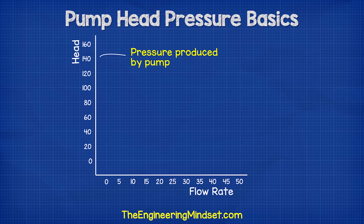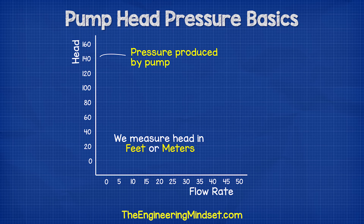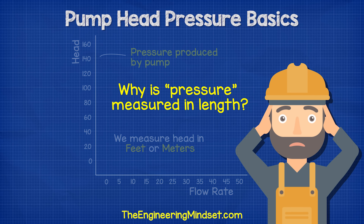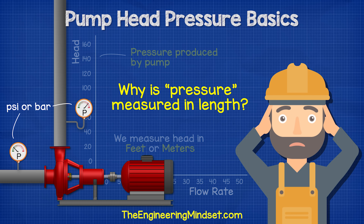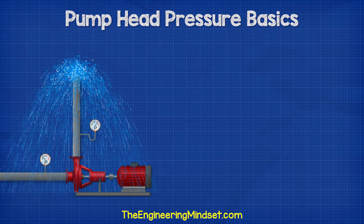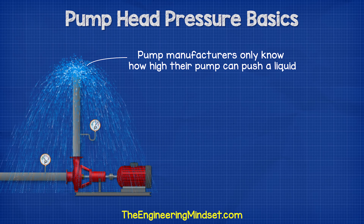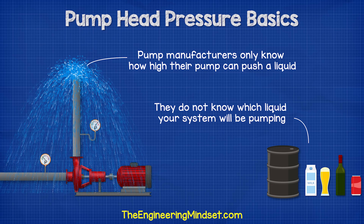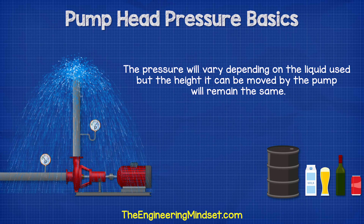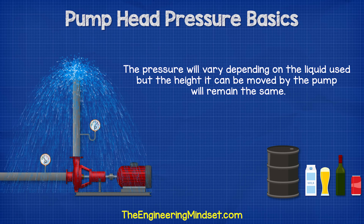Head is shown on the vertical axis and this is referring to pressure, so we often hear the term head pressure. We measure head in feet or meters, which doesn't seem correct considering we're talking about pressure, especially as you see the pressure gauges on the pump typically reading psi or bar. The reason for feet or meters is that pump manufacturers only know how high their pump can push a liquid — they do not know which liquid your system will be pumping, and as each liquid has different properties, the pressure will vary depending on the liquid used.